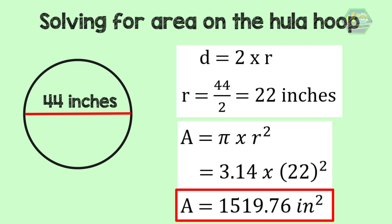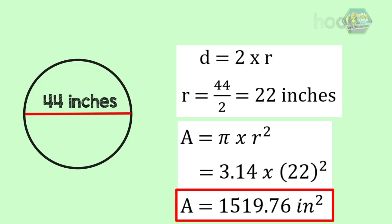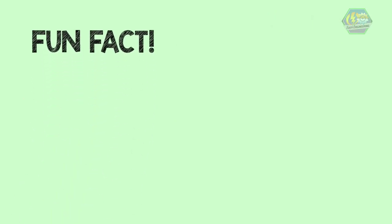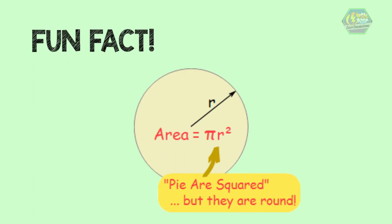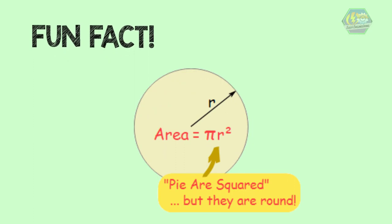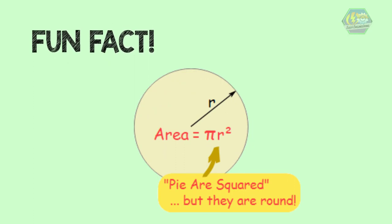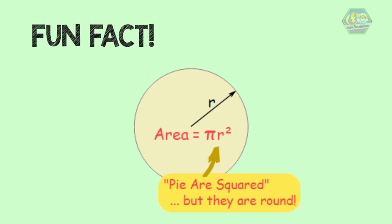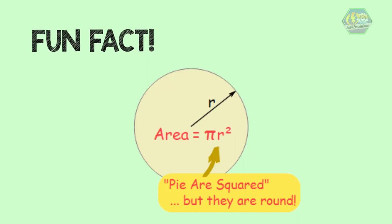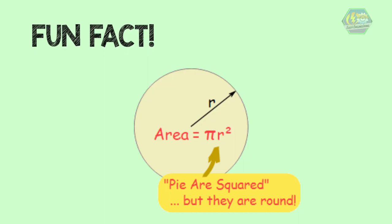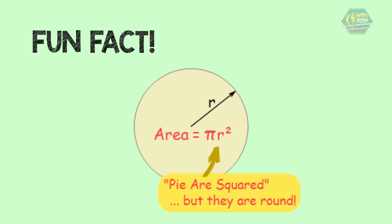That's the area of the hula hoop. Good job — you helped Regine find the area of her hula hoop! Congratulations, now you already know how to calculate the circumference and area of a circle. A fun tip to memorize the area formula: just remember the saying 'pi r squared, even though pies are usually round.' That's it! I hope you learned a lot about circles. Once again, this is EZ Engineering — we make engineering topics easy and fun for you.